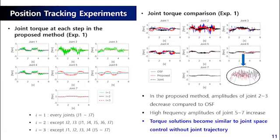The left figure shows the joint torque solution at each step in the proposed method. It is obtained by using only high-performance actuators as the step increases. The right figure shows the joint torque solution of three different controllers. In the proposed method, amplitudes of joints 2 and 3 decreased compared to the OSF as intended. Also, high-frequency amplitudes of joints 5, 6, and 7 increased. These variations mean that the torque solution of the proposed method becomes similar to that of joint space control without joint trajectory.